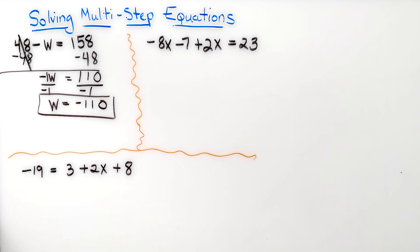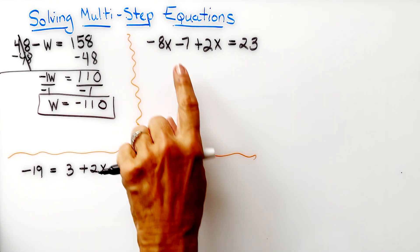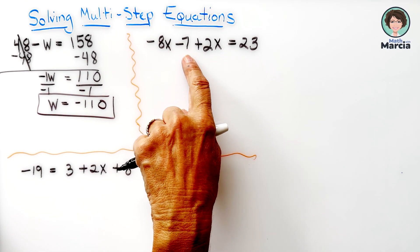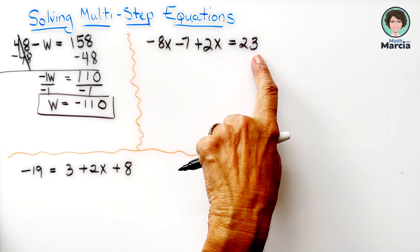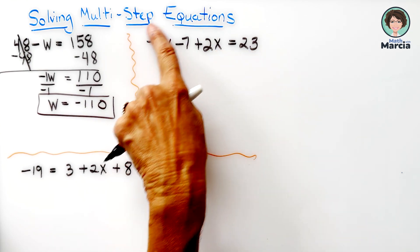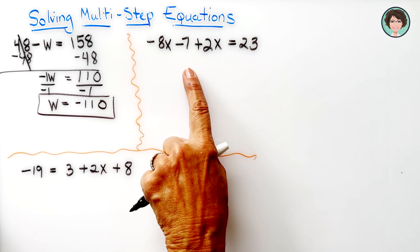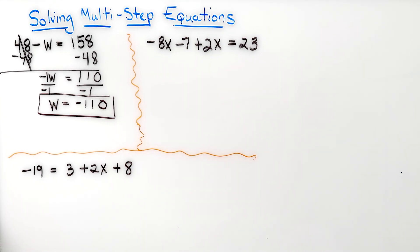Let's go on to the next problem. With this problem, negative 8x minus 7 plus 2x equals 23, I must simplify this side of the equation first before I move anything.